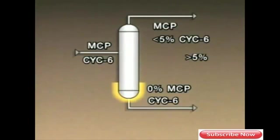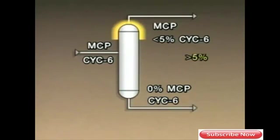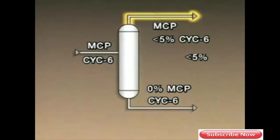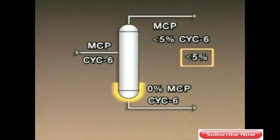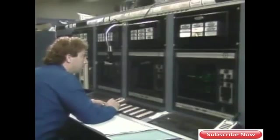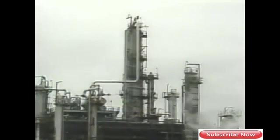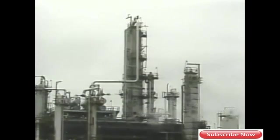If the tower is too hot, the bottom temperature could be too high, and it should be decreased slightly. Decreasing the bottom temperature allows more of the heavier component — CYC6 — to remain in the bottoms product, which may decrease the amount of CYC6 passing overhead and bring the products back to spec. If the percentage of CYC6 in the overhead product falls too far below 4%, there is a danger of some MCP remaining in the bottoms product. To bring the products back to spec, the bottom temperature should be increased slightly to ensure that as much of the lighter component as possible is boiled out of the bottoms liquid. In general, changes in a tower's operation should be made in small increments.